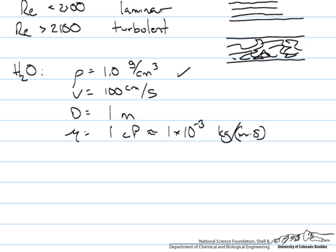So if we start with grams and centimeters cubed we have to make sure everything else is in those terms. We have centimeters per second here. And we have meters. So we need to convert this to 100 cm.